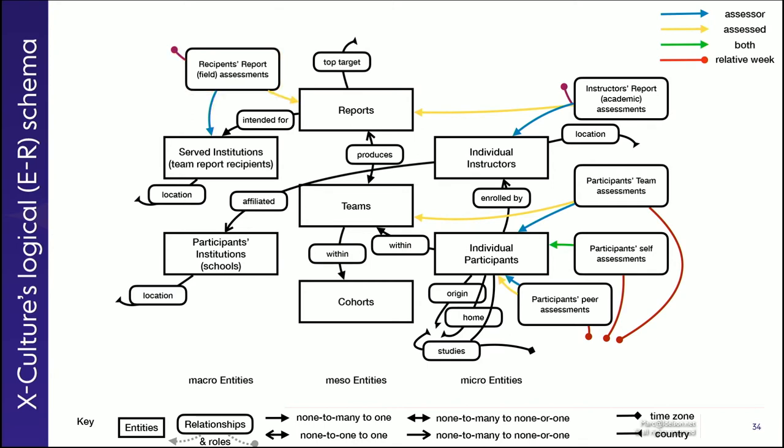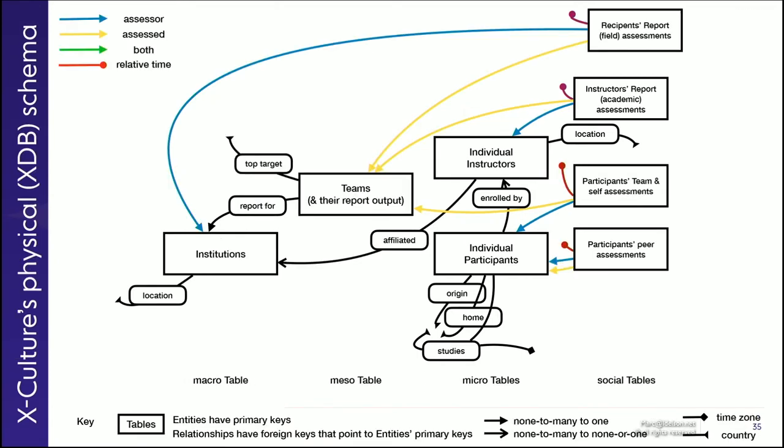So there are five assessment relationships conceptually in X-Culture data. Now this is the conceptual or logical entity relationship schema. In practice, some of these objects are folded together in a single table. So the teams and their report output belong in a single table. The assessment of team and self are folded into a single table. And any relationship, the institutions, schools and companies can also be folded in a single table.